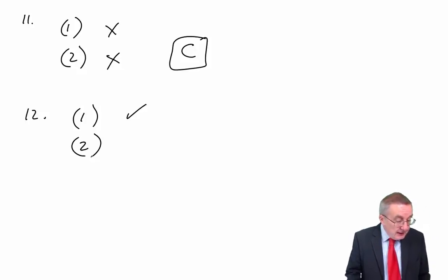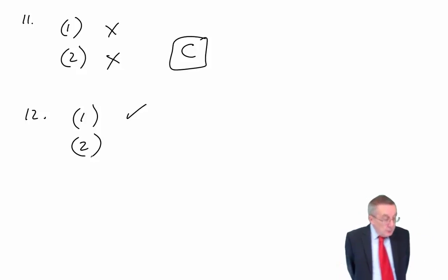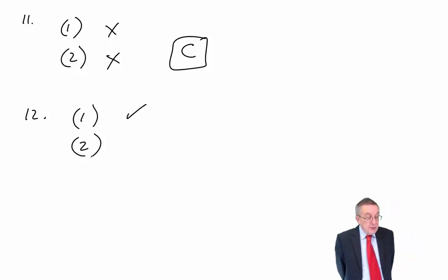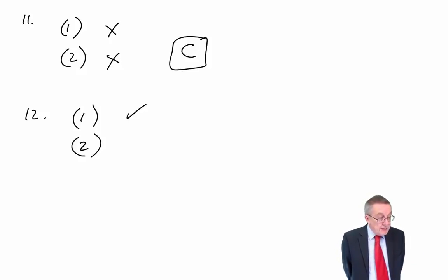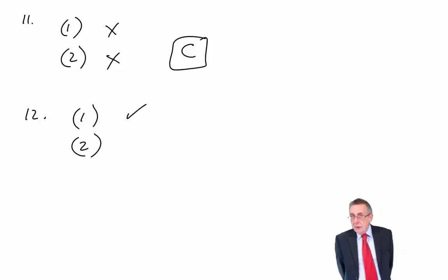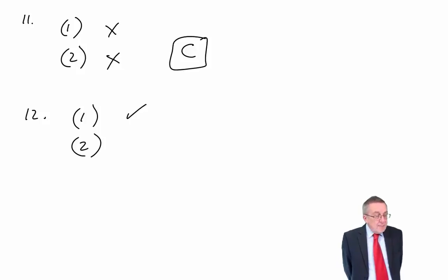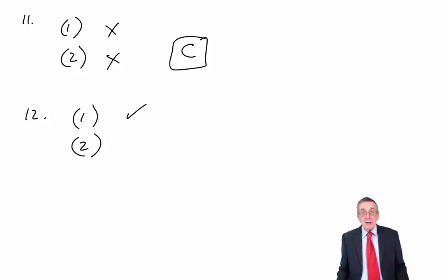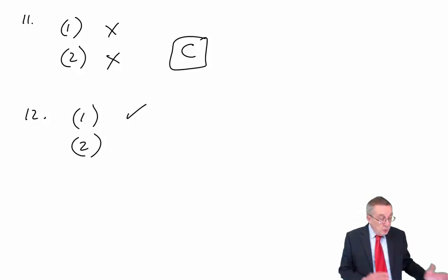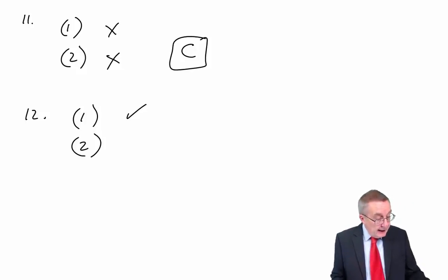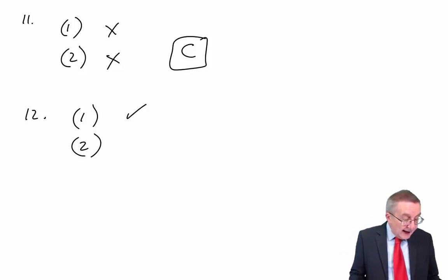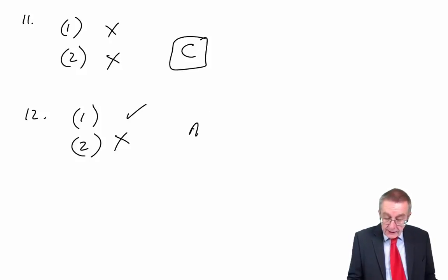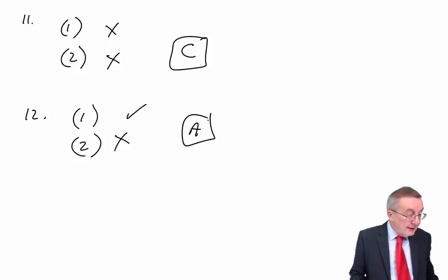Number two: input-output analysis divides material flows into three categories — material flows, system flows, delivery and disposal flows. They're trying to confuse you. Input-output analysis itself doesn't split them into those three categories — it looks overall at what goes in and what comes out. It doesn't divide them into these categories. So number two isn't true. The answer, therefore, is only statement one — the answer is A.